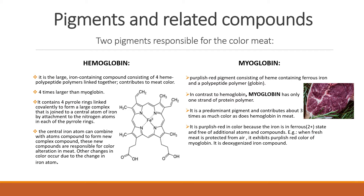Let's have a look at the pigments — the two basic pigments which are responsible for meat color. One is hemoglobin. It is a large iron-containing compound consisting of four heme polypeptide polymers linked together that contributes to meat color.